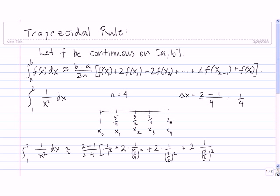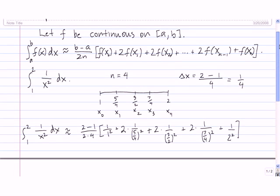Finally, we're at our last x value, and that's the one where we don't put a 2 in front, so it's just f of 2, which is 1 over 2 squared.